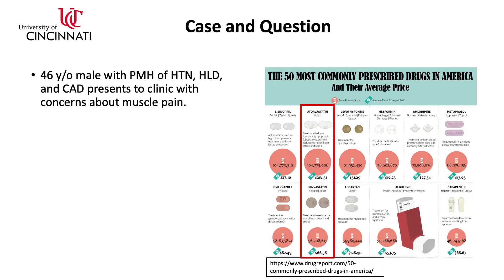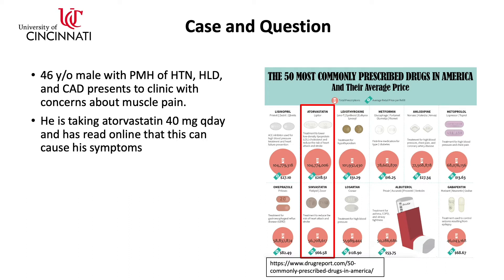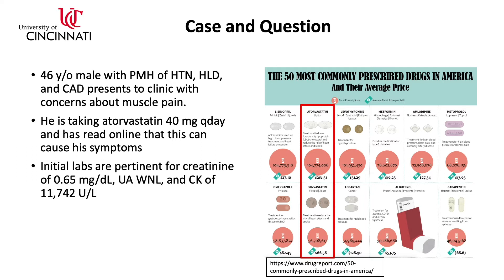Let's start with the case. We have a 46-year-old male with a past medical history of hypertension, hyperlipidemia, and coronary artery disease who presents to clinic with concerns for muscle pain. He's currently taking atorvastatin 40 milligrams per day and has read online that this can cause his symptoms. Of note, atorvastatin was the second most prescribed medication in 2020, so you could imagine this may not be an uncommon circumstance.